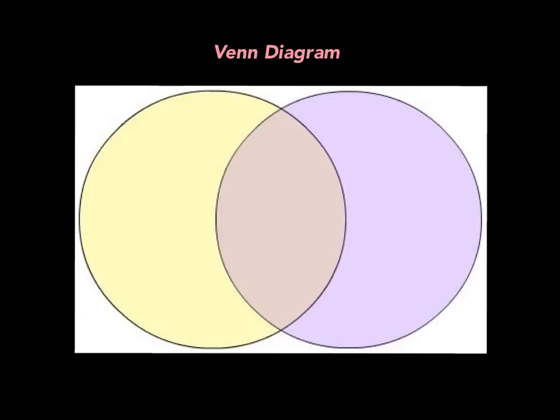To help use prime factors to find the greatest common factor and the least common multiple, I'm going to use a Venn diagram. A Venn diagram lets us see what's common and different between two different sets or things. The different things have their own space on either side of the diagram, while the common things go right in the middle.